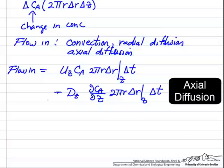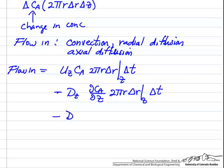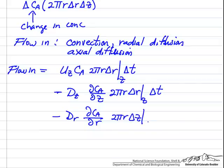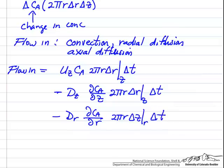For example, if the concentration is higher at a higher z, diffusion is actually back toward lower z — diffusion is from high concentration to lower. We have a similar term for diffusion in this annular region due to a radial gradient. It's the same idea, but now we have to put in the area 2πr · delta z, evaluate it at r, and multiply by delta t.